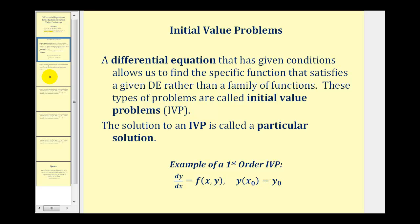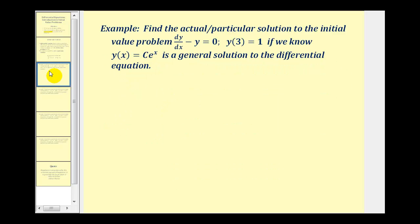Let's take a look at an example. We want to find the actual or particular solution to the initial value problem dy/dx minus y equals zero, where y of three is equal to one, if we know that y of x equals c times e to the power of x is a general solution to the differential equation. Since we're also given that y of three equals one, we can find the particular solution to this IVP.